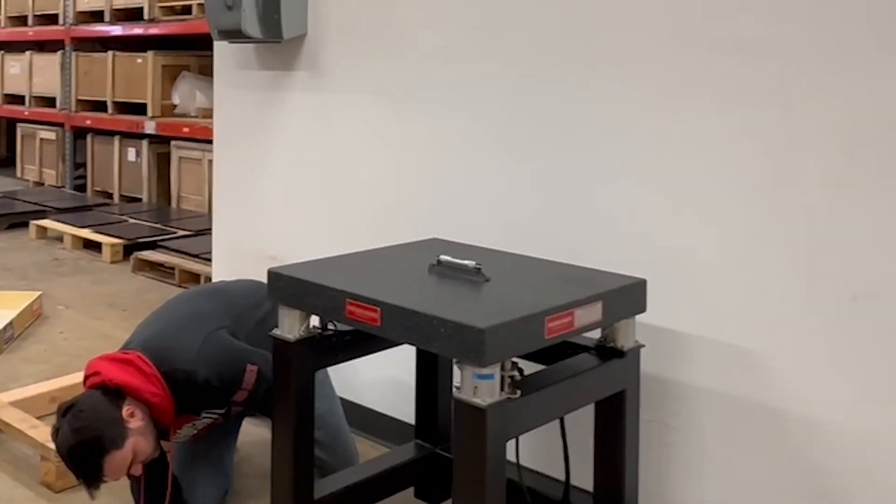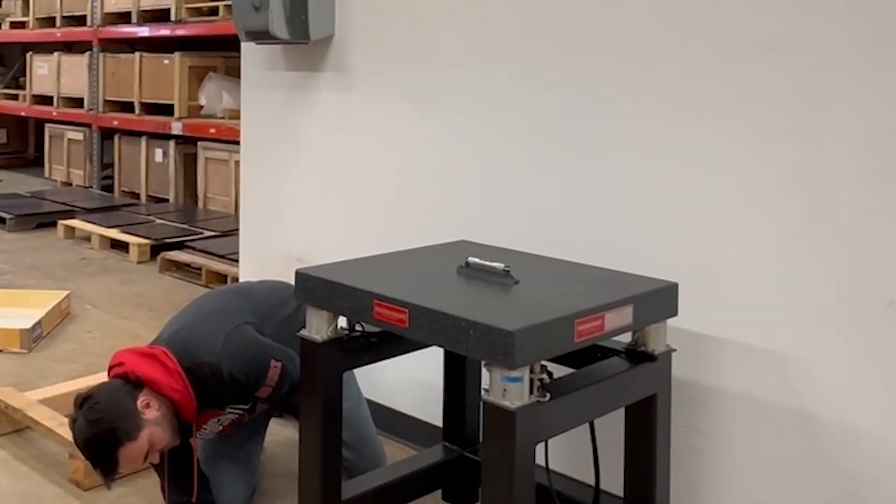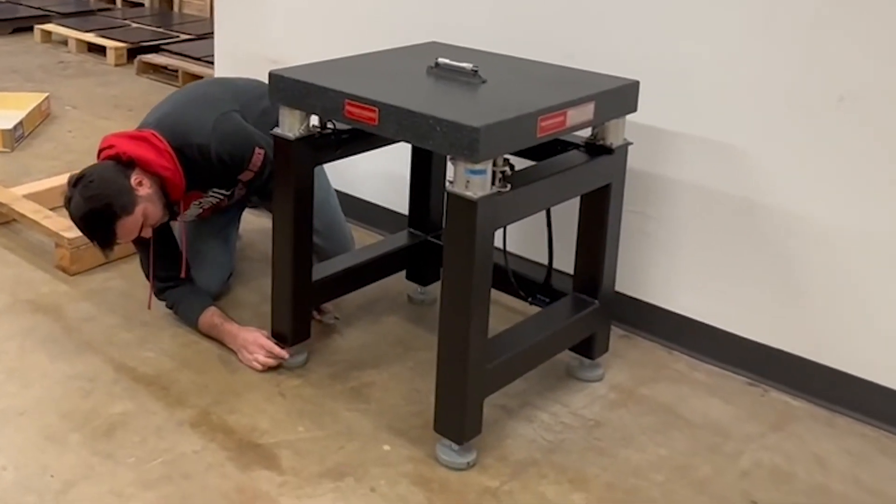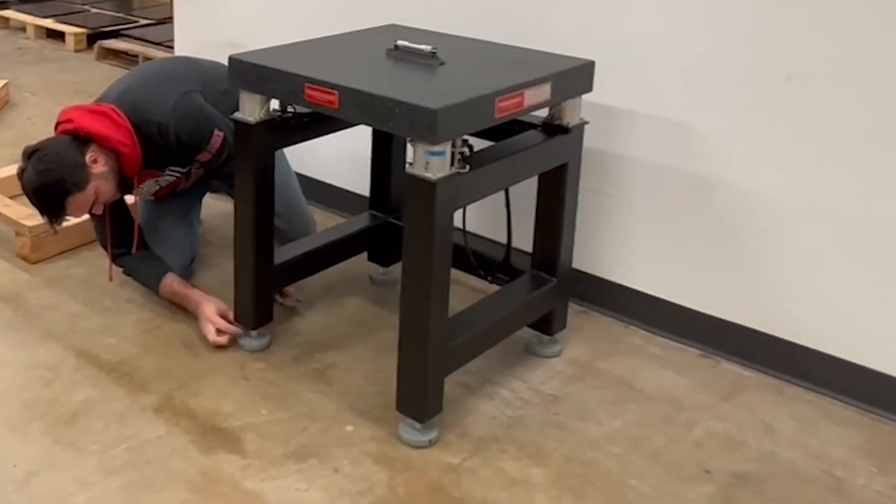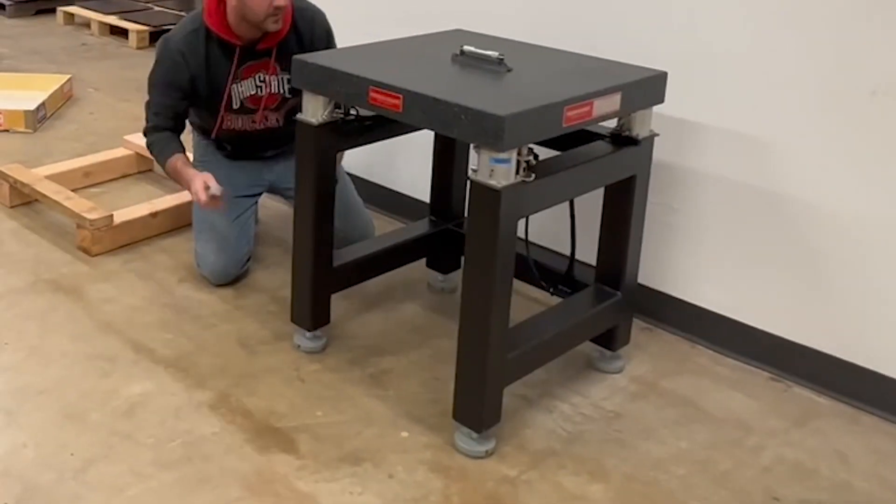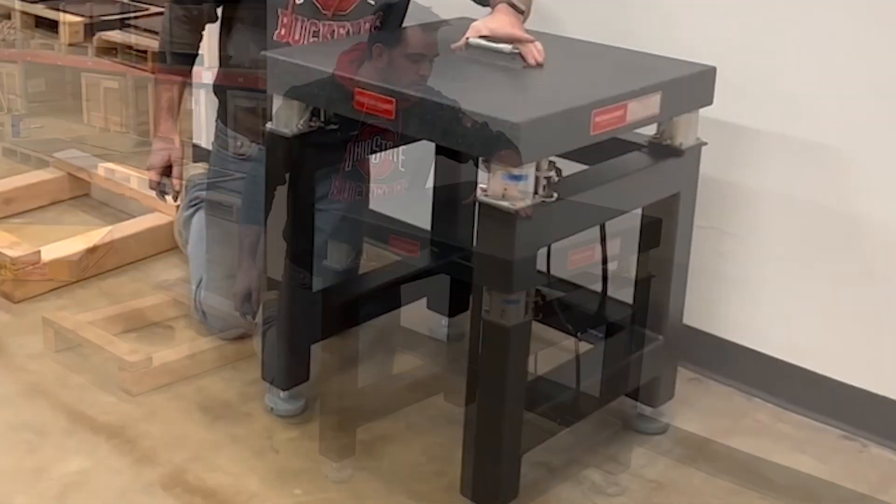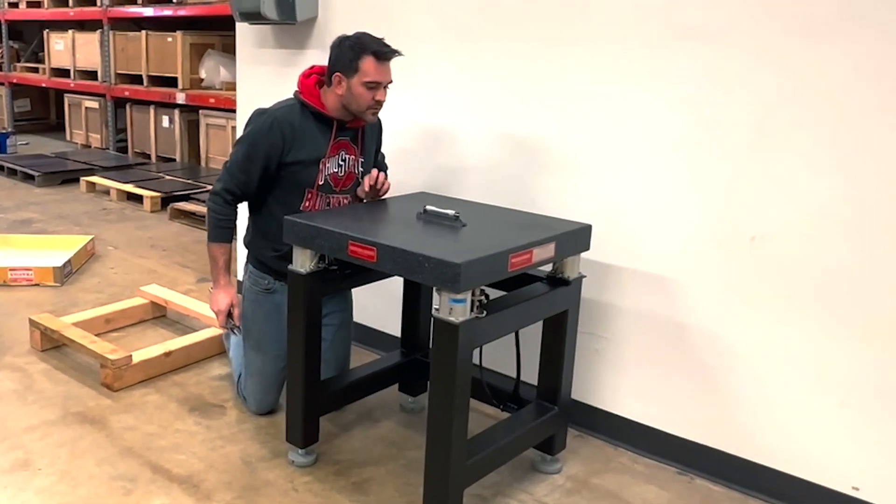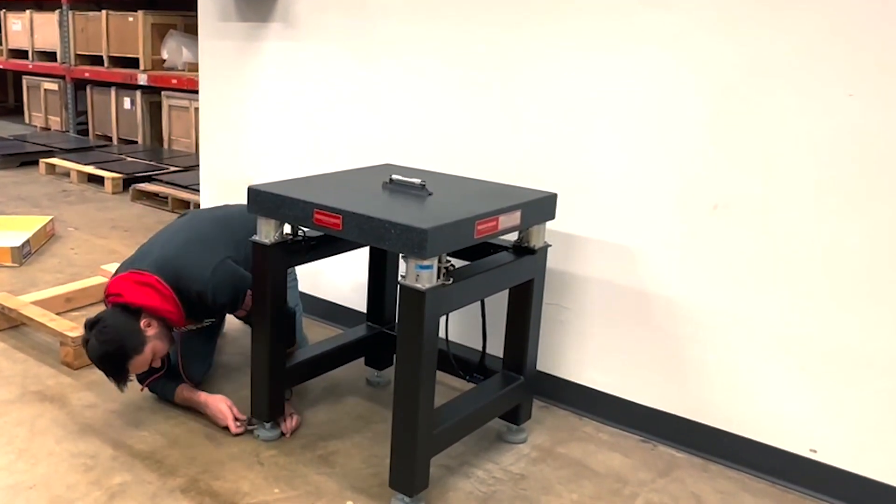At the bottom of the leveling feet, there's a little jam nut here. You want to make sure that's loose. And then there's two flats here. You'll adjust with your wrench. So in this case, this side is a little high, so we're going to come down with it.